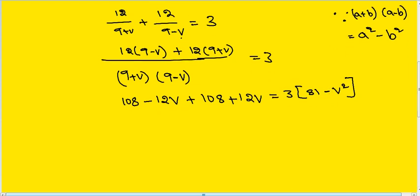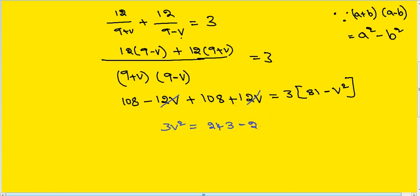The 12v terms cancel out. We get 108 plus 108 on the left side, which equals 216. On the right side: 3 times 81 equals 243, minus the v squared term. So 3v squared equals 243 minus 216, which gives 27.